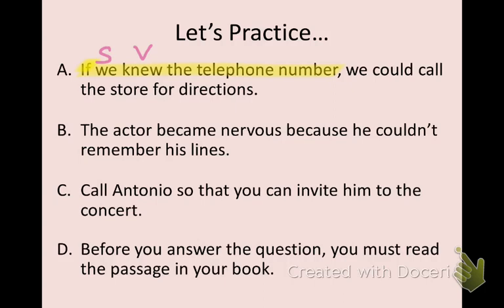In sentence B: "The actor became nervous because he couldn't remember his lines." We have a subordinating conjunction in the middle of the sentence, so the adverb clause goes all the way until the end mark. Within that adverb clause, the subject is "he" and the verb is "could remember." That leaves us with the independent part of the sentence: "the actor became nervous."